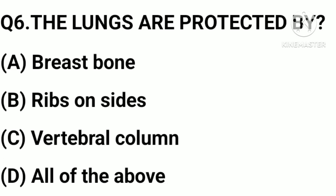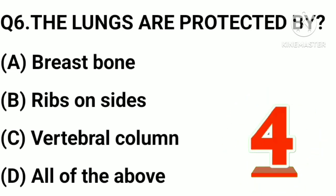The lungs are protected by: A, breast bone; B, ribs on sides; C, vertebral column; D, all of the above.